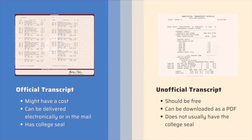Over on the right, we have the unofficial transcript. It looks a lot more plain than the official one and it will most likely say 'unofficial' on it so that you know it's not the official version of your transcript. These will most likely be free. They're downloaded as a PDF — you can download them right on your computer and then send it to the Foundation via email. There shouldn't be a hassle with doing that, and it usually does not have the college seal but it might just say that it is unofficial somewhere on the document.